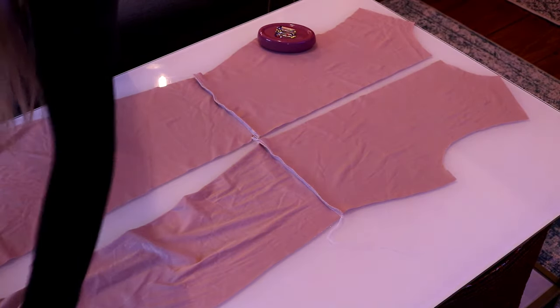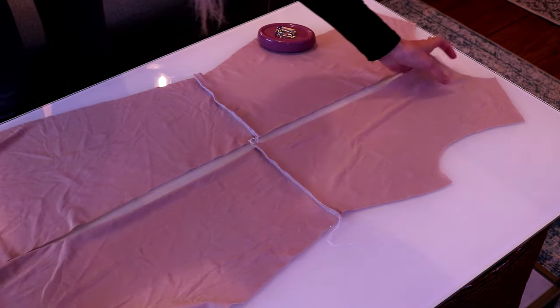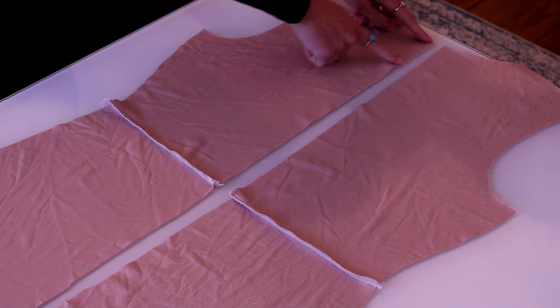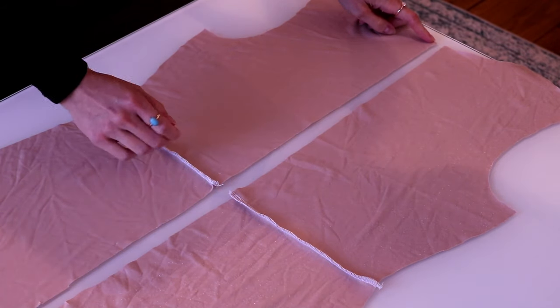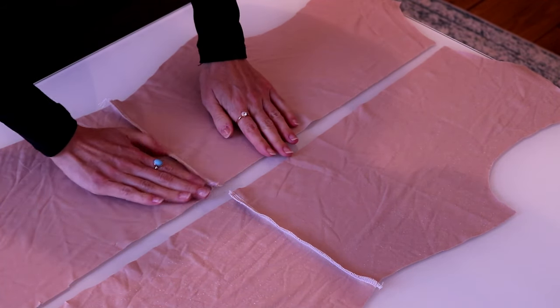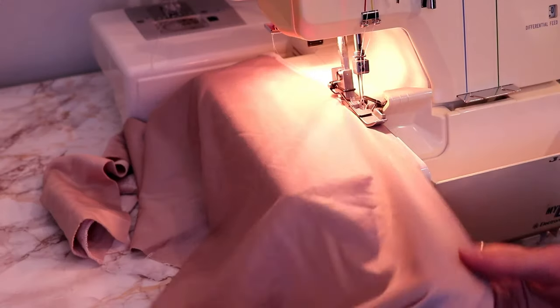Now it's time to start working on the zipper. Start by finishing the raw edges in the middle of the back pieces. Do not stitch the pieces together, just finish the raw edges separately.